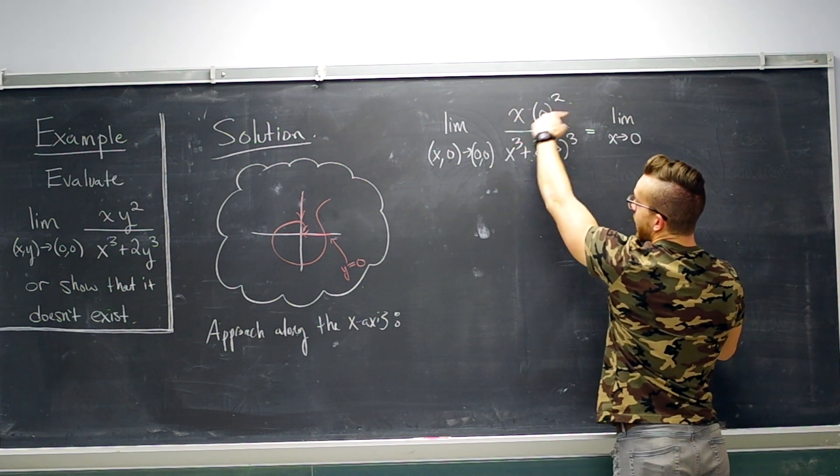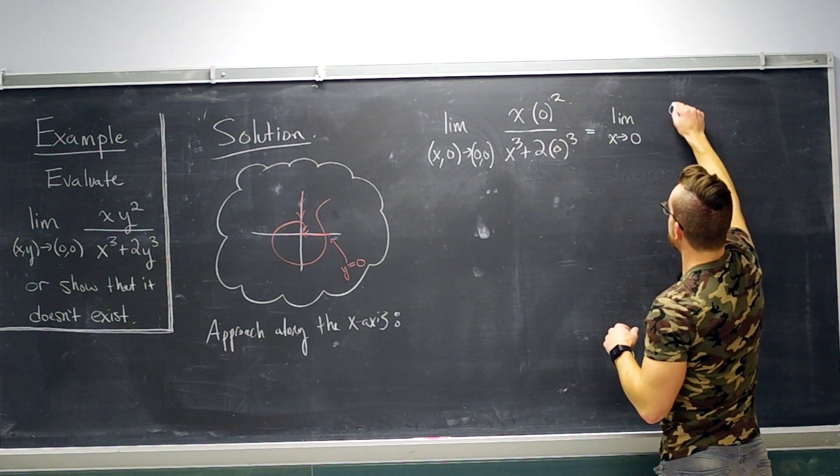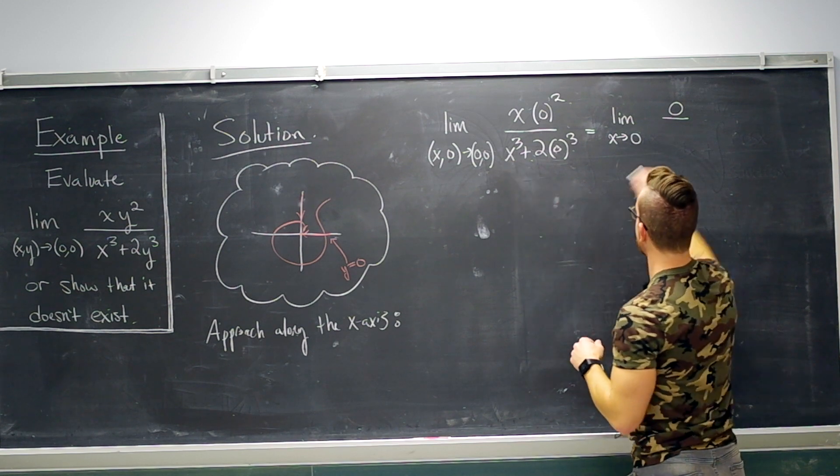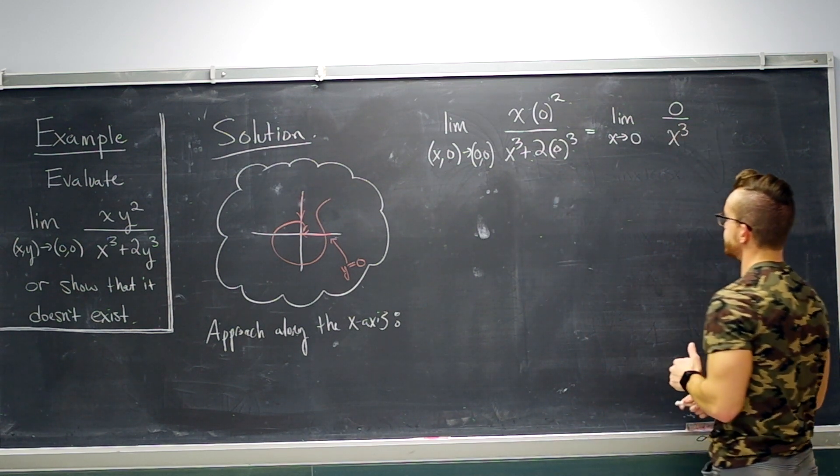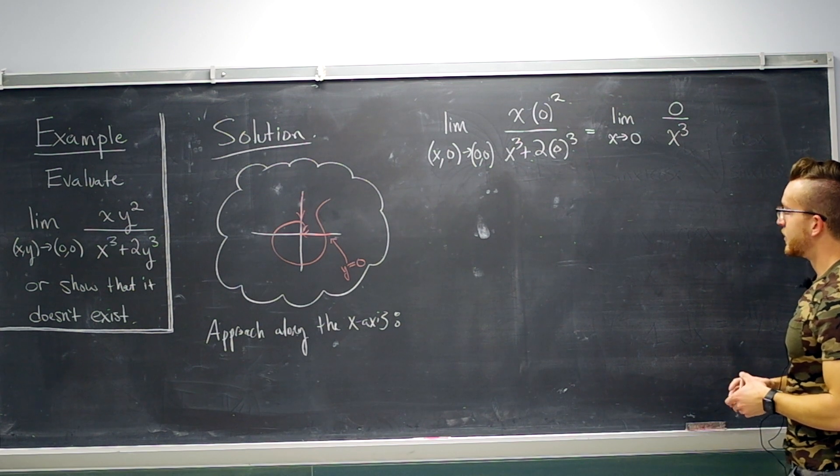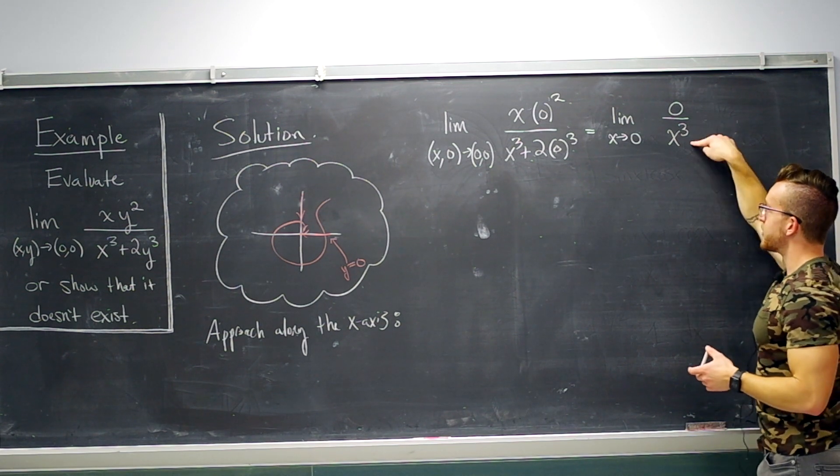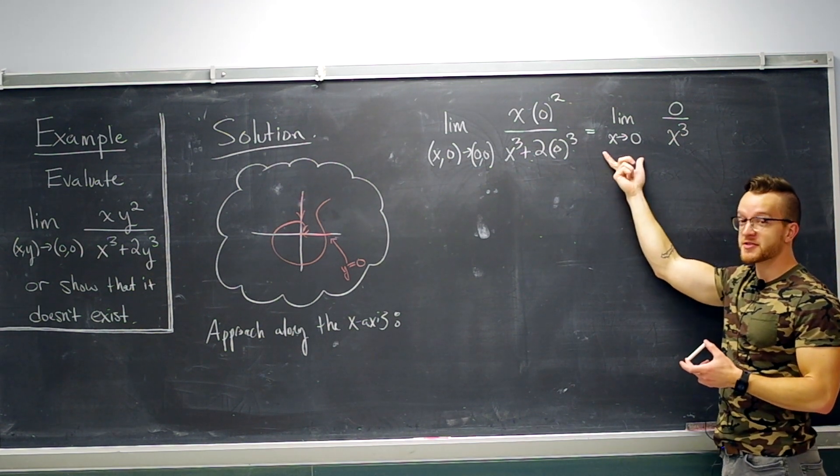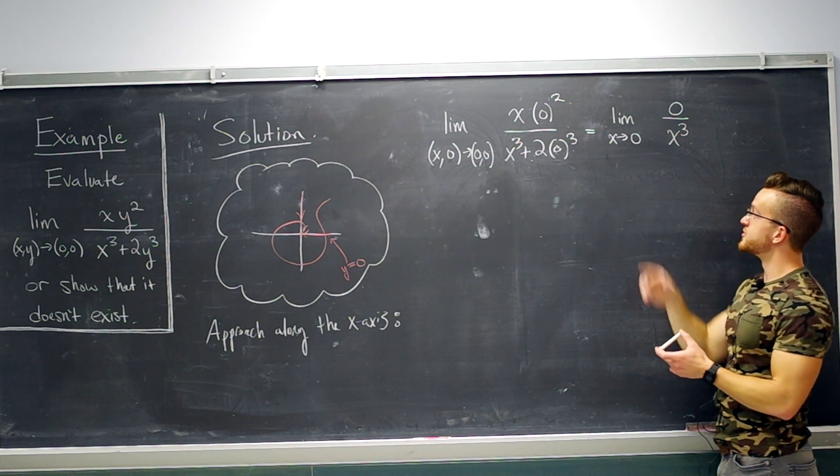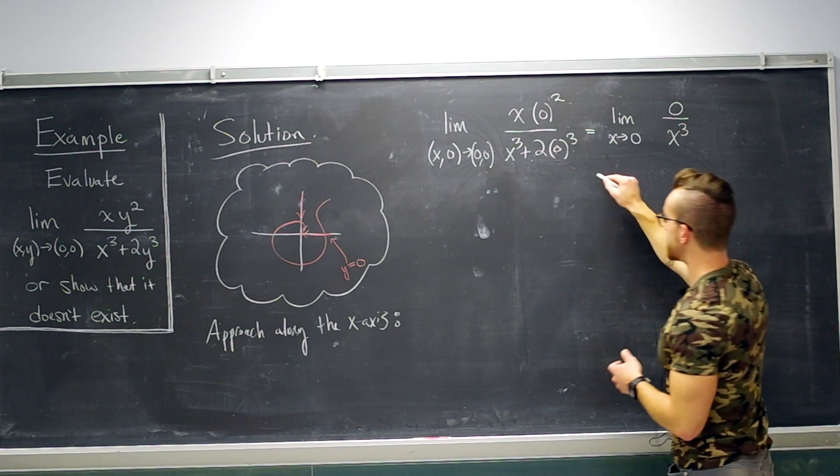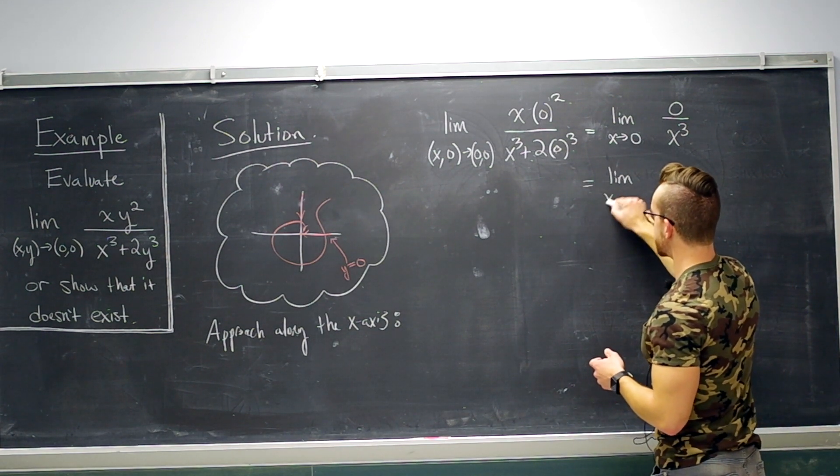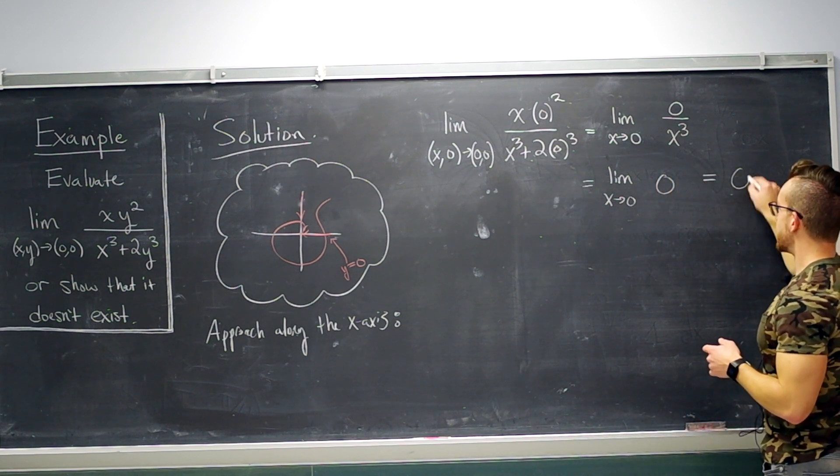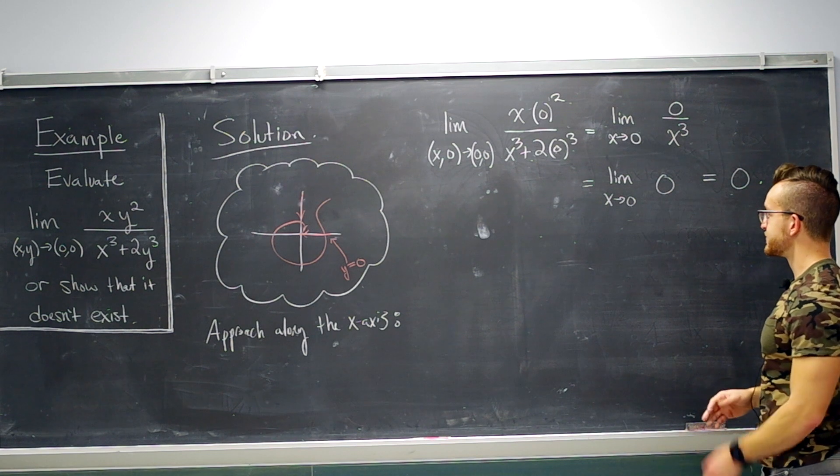Now what do we have on top? x times 0 is 0. This term is 0 here, so in the denominator, it's just x³. Well, 0 over x³ is 0. x is never 0 because it's a limit, right? So this expression is just identically 0, so we're taking a limit as x approaches 0 of 0, which is 0.